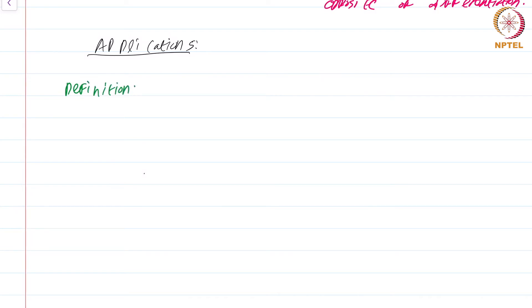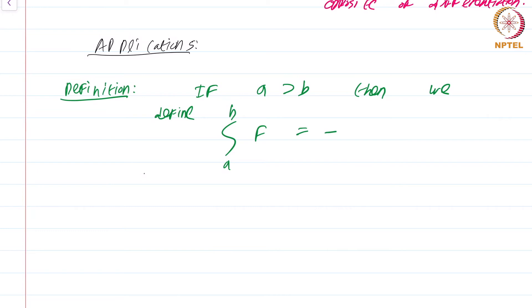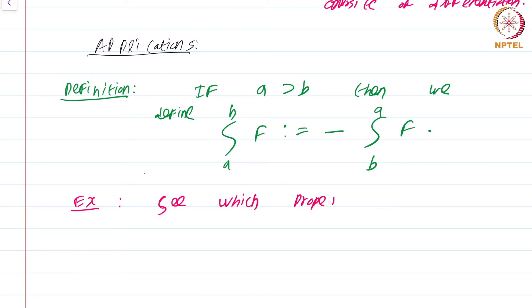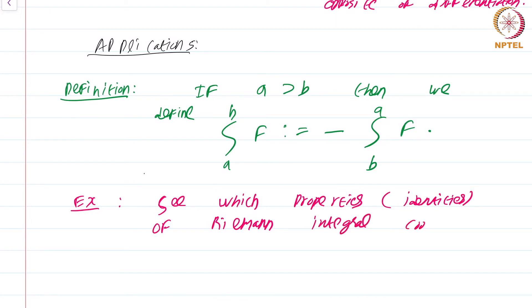Before we begin with the first application, let me just give a definition. If a > b, then we define ∫_a^b f to be −∫_b^a f. This is the usual definition. As an exercise, see which properties or identities of the Riemann integral continue to be valid with this more general definition.